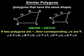Notice that the corresponding parts will always be matched up in our similarity statement. In other words, we know that angle A corresponds with angle R because A and R are mentioned first in our similarity statement, and we know that angle B corresponds with angle S because B and S are mentioned second in our similarity statement, and so on.